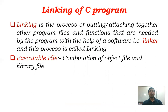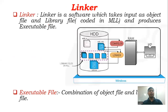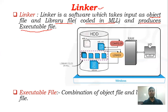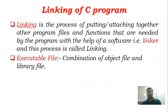Then comes the linking process. After compilation, you get an object code file. However, it is not yet an executable file, because there are many library files that we have used in the program that need to be linked to our object code. We use the linker for this, and this process is called the linking process. The linker is a software which takes the object code file and library files, both coded in machine-level language, and combines them to generate an executable file which we can run.